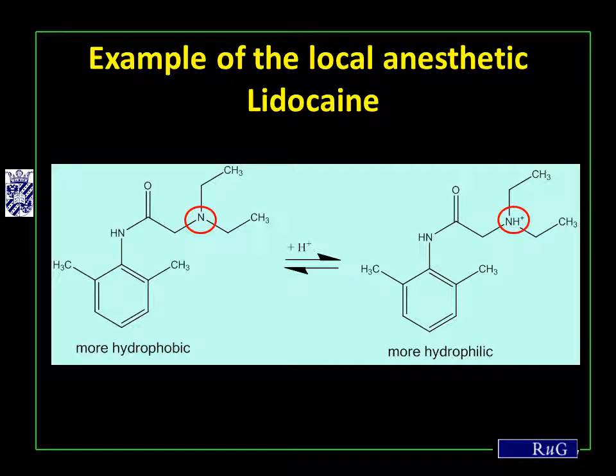Let's take an example: the local anesthetic lidocaine, known because it is used by dentists to anesthetize your mouth before drilling. Lidocaine is a base, as you can see from the tertiary amine group on the upper right end of the molecule. This amine can be protonated to the ammonium cation, which is much less hydrophobic and thus difficult to extract. So it is important to adjust the pH to favor the more hydrophobic non-protonated base.